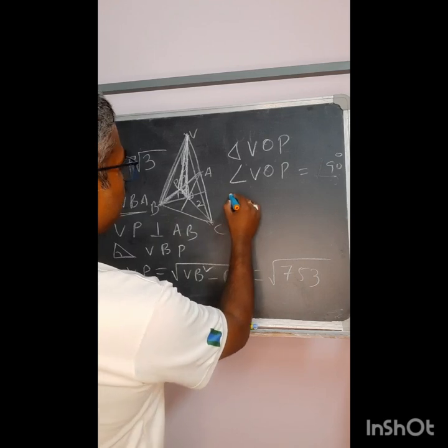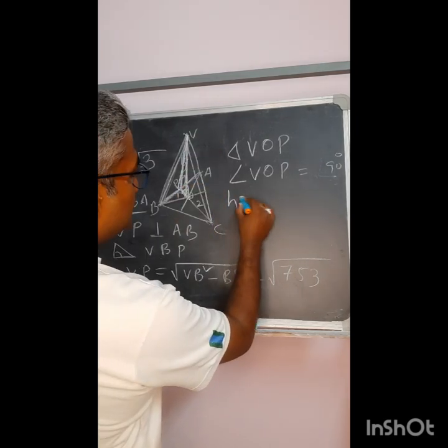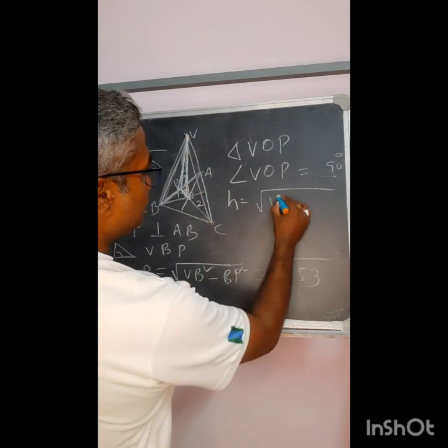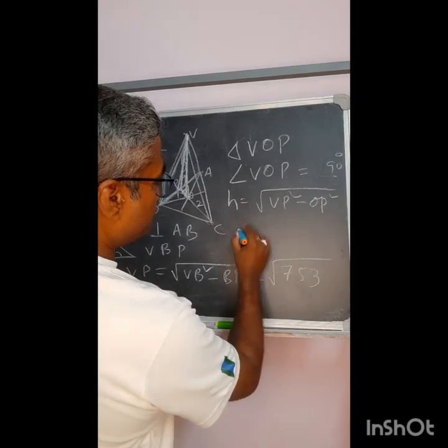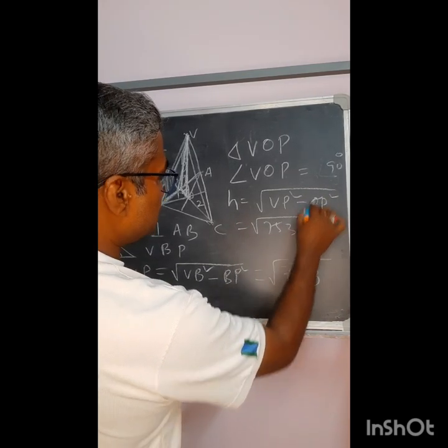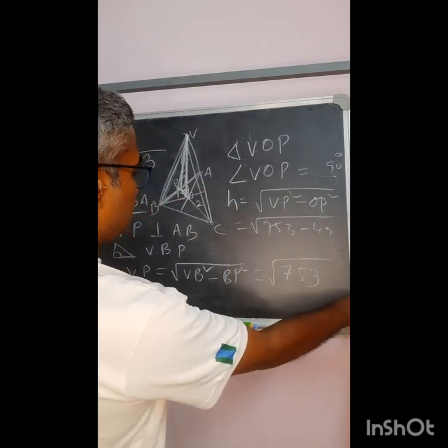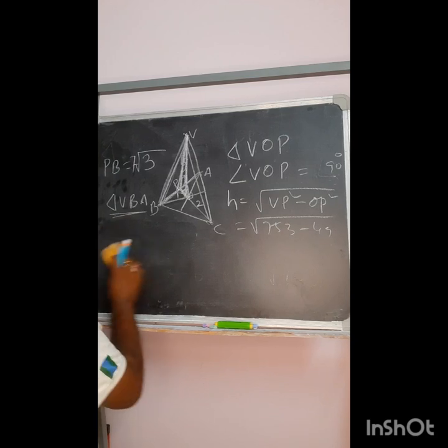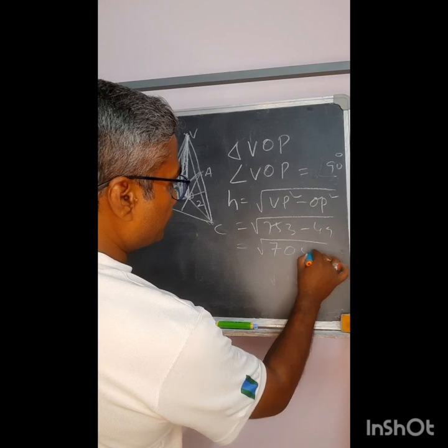Now this is a right angle triangle. From there H, that means the vertical is equal to nothing but the slant height VP square minus OP square. Both of these values are known. So if I put 7 root 53 means OP, VP square minus OP square is 7 square is 49. So from here you will get the value of this is equal to 704.